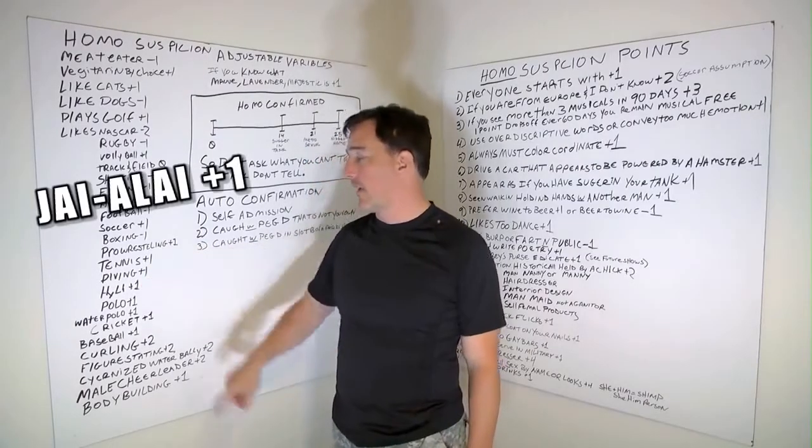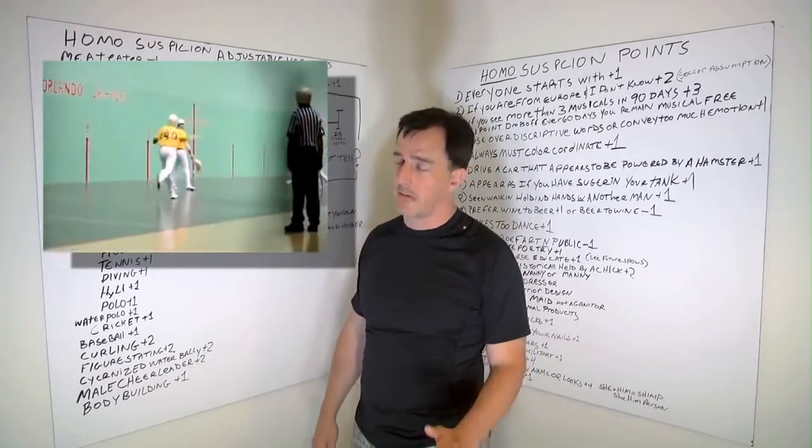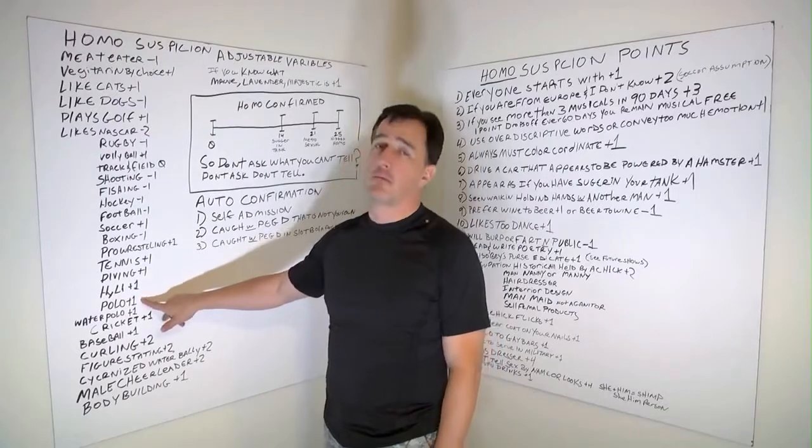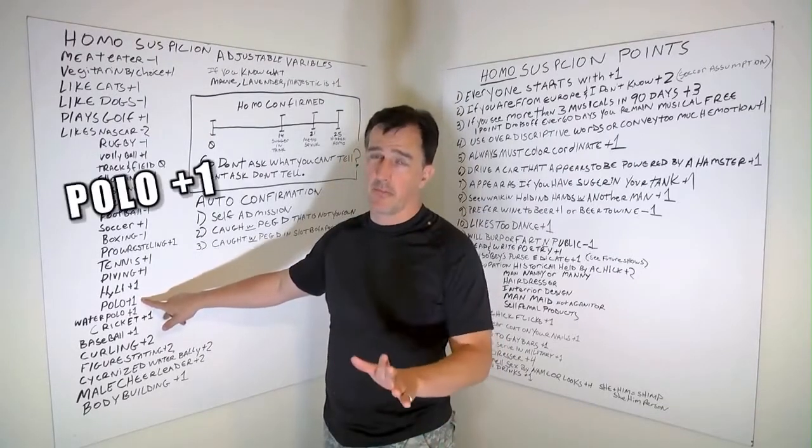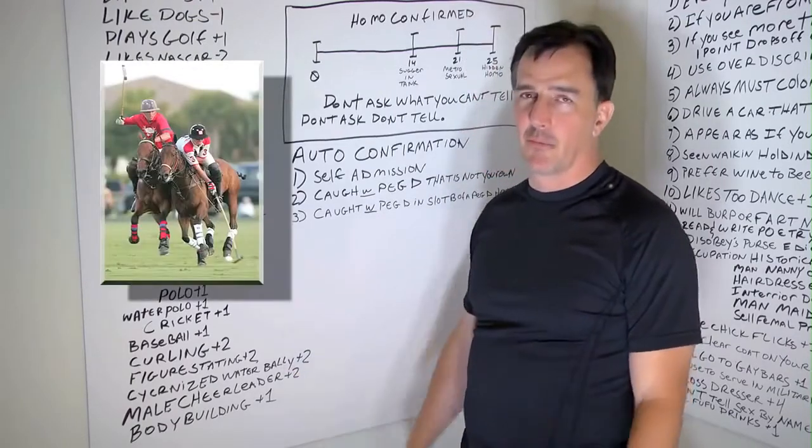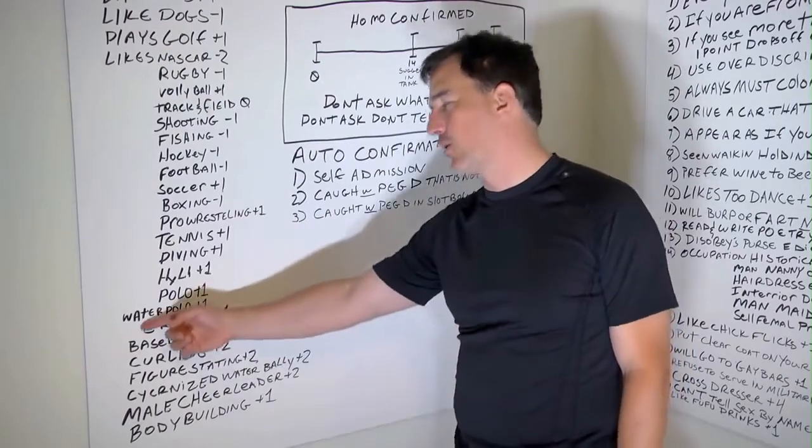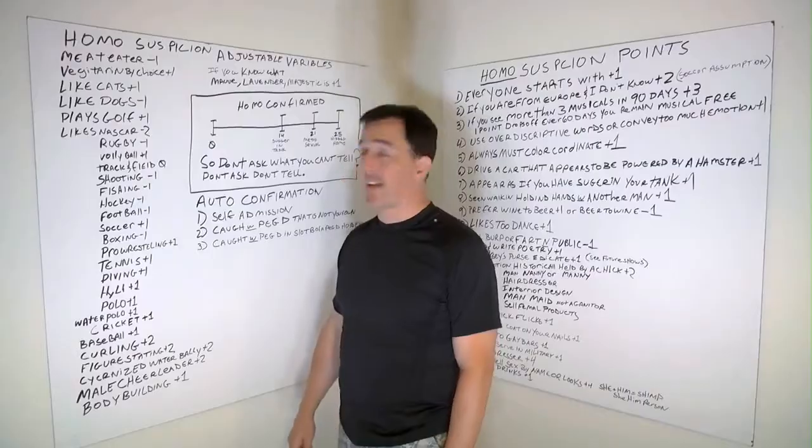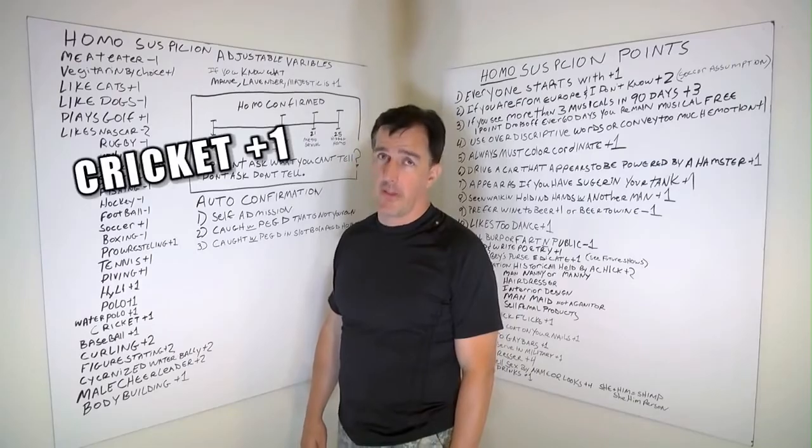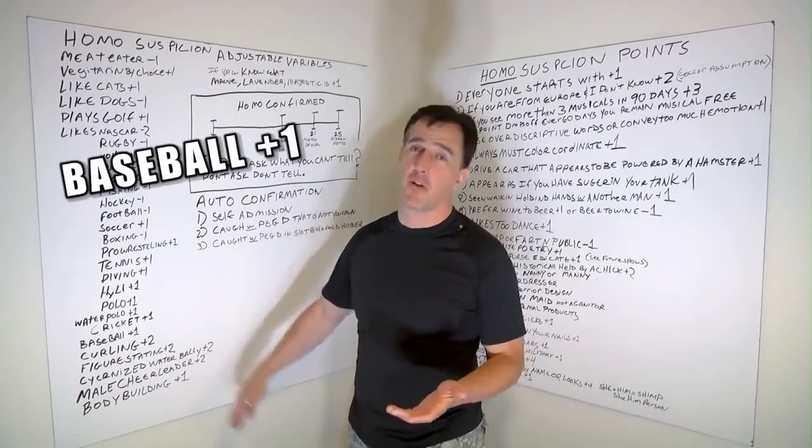Jai alai. Okay, that's a crazy ass thing where they have the hooked loops on their hands and they throw the ball like 200 miles an hour. Yeah, that's stupid. Polo. Okay, that's right from the 1800s. I know it's on horses and stuff. And then, yeah, big mallets. Still, plus one. And then we get down to water polo. Same thing. Plus one. Cricket. What the hell is that? I don't know. Nobody understands cricket. You got to know what a crumpet is to understand cricket. And you know what? If I'm going to give cricket one, then baseballs get one too.